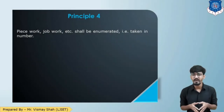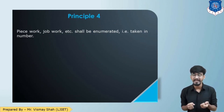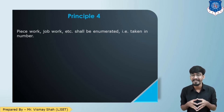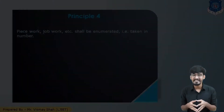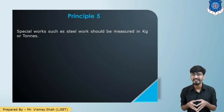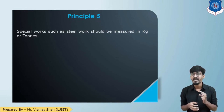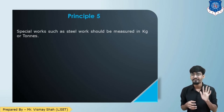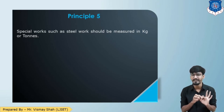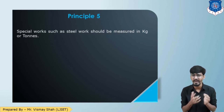Principle 4: Piece work or job work shall be quantified in numbers. For example, plumbing accessories, number of taps, number of handles, number of glass panes — these are measured in numbers. Principle 5: Special work such as steelwork should be measured in weight — kilograms or tonnes. Note that in your textbook only four principles are listed, but the fifth principle of weight should also be considered. So the five principles are: (1) volumetric — cubic meters, (2) surface — square meters, (3) thin/long — running meters, (4) job work — numbers, (5) special steelwork — weight.